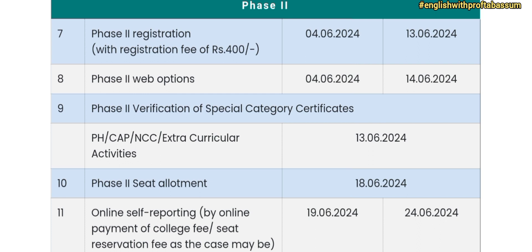If you don't get a seat in phase 1, or you don't like the college allotted, then you should opt for phase 2. Phase 2 registration date is 4th June 2024 to 13th June 2024, and the fees are Rs. 400. Phase 2 web options will be from 4th June to 14th June. Verification for special category — NCC, physically handicapped, and extracurricular activities — will happen on 13th June 2024. Phase 2 seat allotment will be on 18th June, and self-reporting will be from 19th June to 24th June.